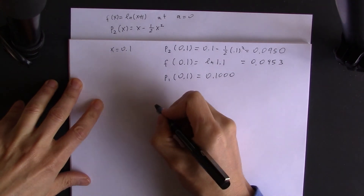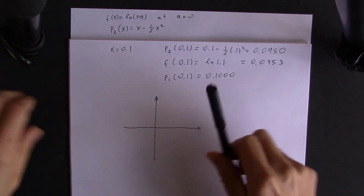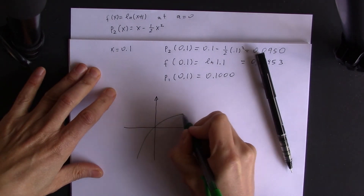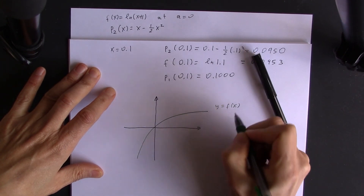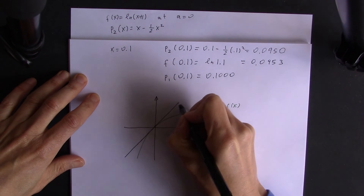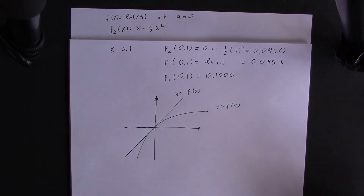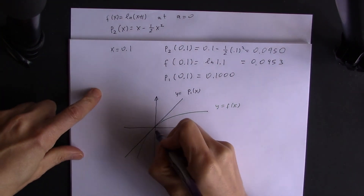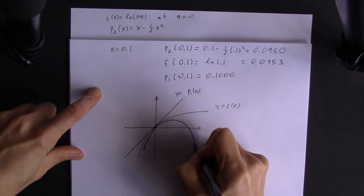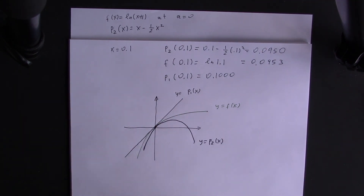We can also see the reason for the improvement from a graph. Looking at the graph of the function, it bends a little bit. The straight line approximation p1(x) cannot capture that bend. The quadratic approximation p2(x) curves in the same way as the function, which is why it is much more accurate than the straight line approximation.